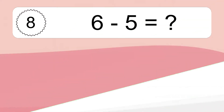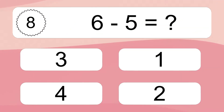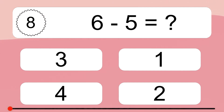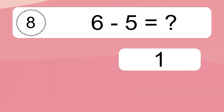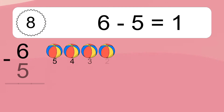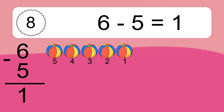6 minus 5 equals what? 6 minus 5 equals 1. Let's count it. 5, 4, 3, 2, 1.